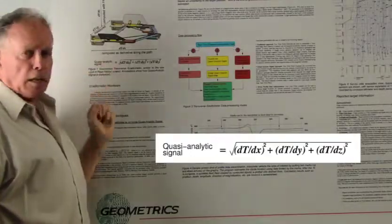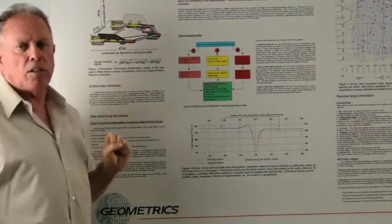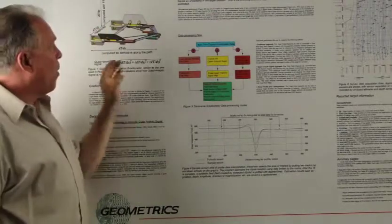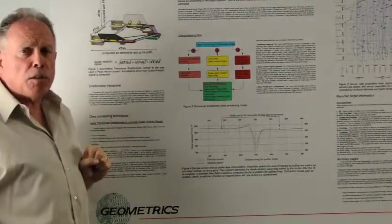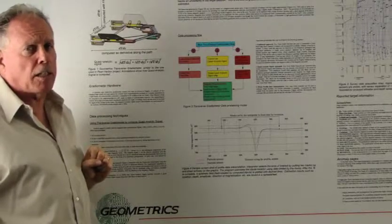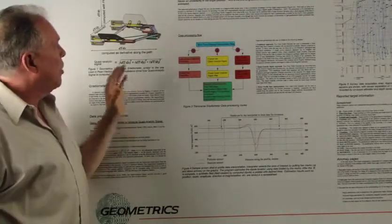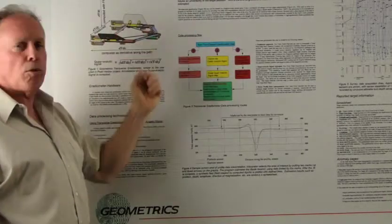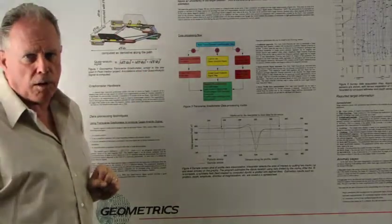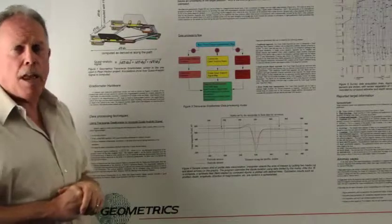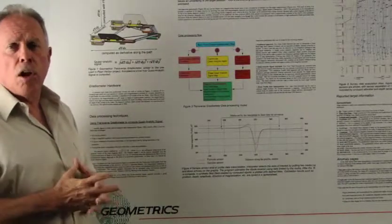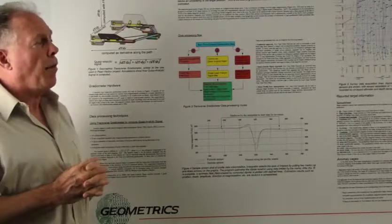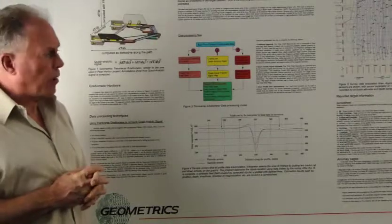We call this quasi-analytic signal. Normal analytic signal computations would have the vertical gradient measured. However, we find that there is sufficient information to get good analytic signal maps based solely on the transverse gradient, the longitudinal gradient, and computing the vertical gradient. We have a separate paper analyzing the results of the quasi-analytic signal versus true analytic signal, and that's available from Geometrics upon request.